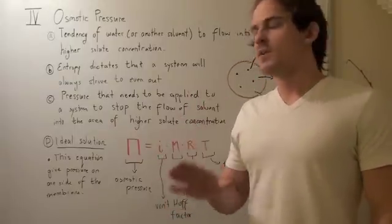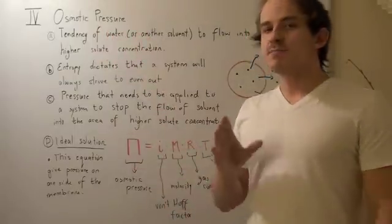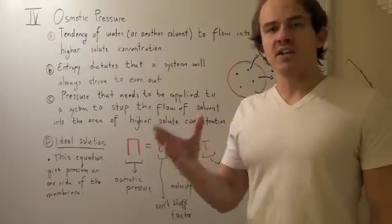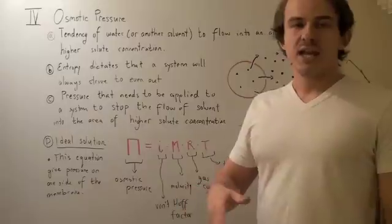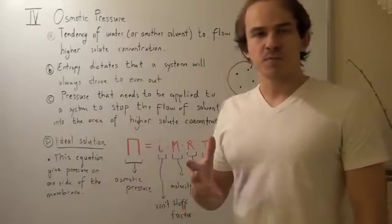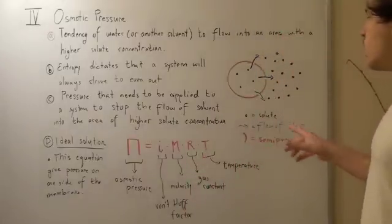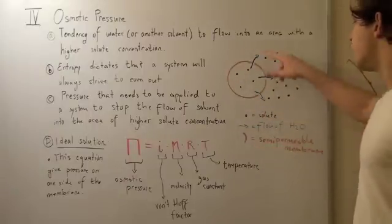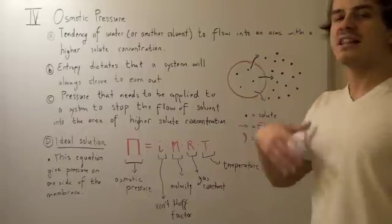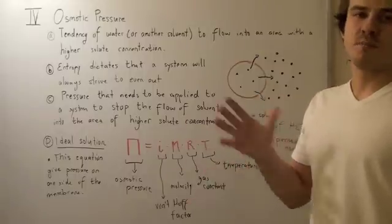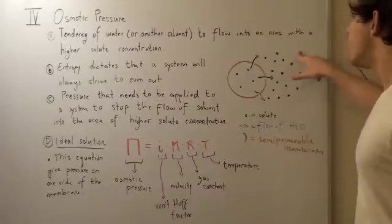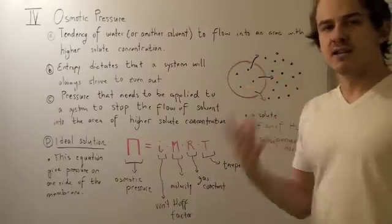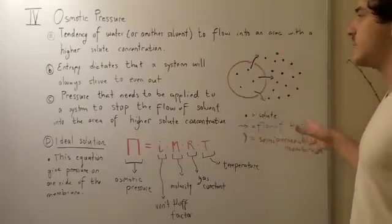The fourth colligative property is called osmotic pressure — the tendency of water or some other solvent to flow into an area with a higher solute concentration. To demonstrate osmotic pressure, let's build a system. We have a cell enveloped in a semipermeable membrane that allows the flow of water but does not allow any solute molecules to pass through. On the outside, we have many more solute molecules than on the inside. Let's see what entropy tells us about such a system.